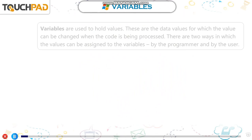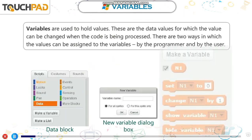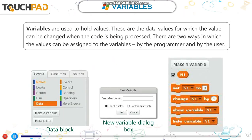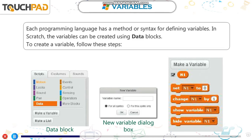Variables are used to hold values. These are the data values for which the value can be changed when the code is being processed. There are two ways in which values can be assigned to the variables: by the programmer and by the user. Each programming language has a method or syntax for defining variables.